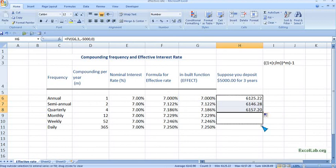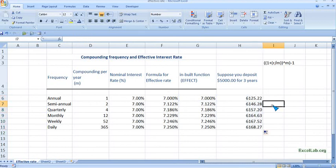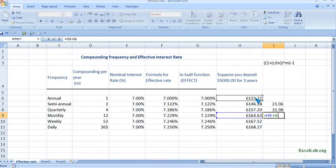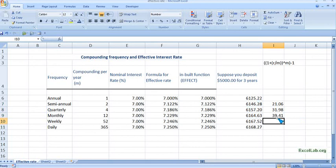Now we can check here, put equal to, and we can see the difference—it's twenty-one dollars. Again, for quarterly, it's thirty-one dollars. You can see it's thirty-nine dollars. As the frequency increases, the output also increases.